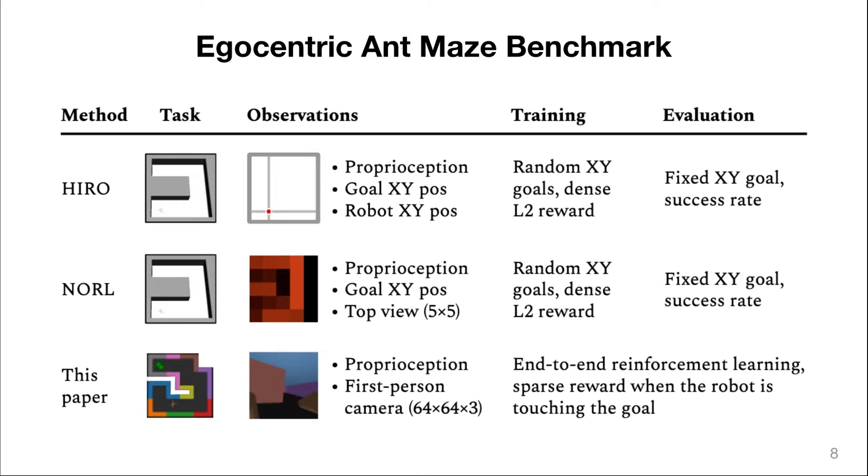In this paper, we propose the egocentric ant maze benchmark where the agent only sees the first-person camera image of the 3D scene and proprioceptive measurements of the robot, such as joint angles, but no global position or a top-down view of the map.